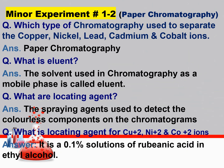More questions, because experiment number 2 in paper chromatography is about the separation of cations. Which type of chromatography is used to separate copper, nickel, lead, cadmium, or cobalt ions? The answer is paper chromatography. What is eluent? The solvent used in chromatography as a mobile phase is called eluent.